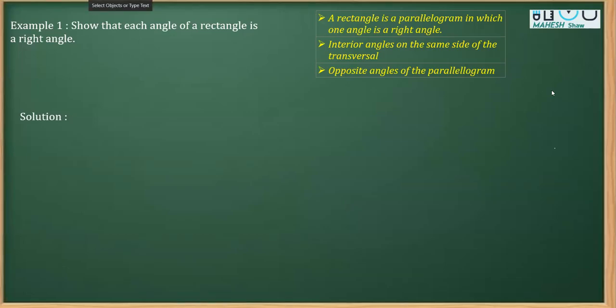I'm going to do example one that is taken from textbook chapter quadrilateral class 9. The question says here that show that each angle of a rectangle is a right angle.